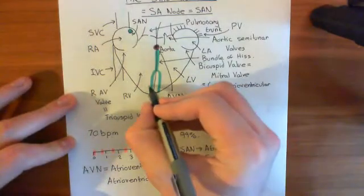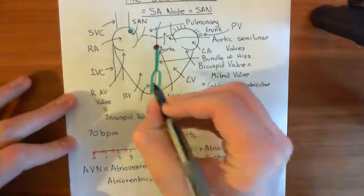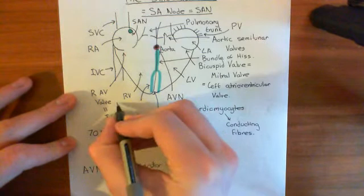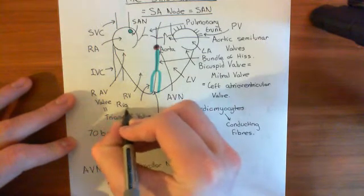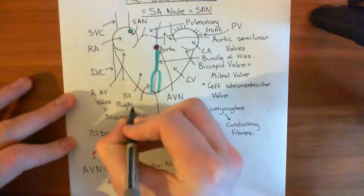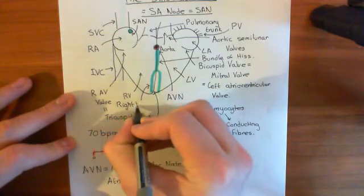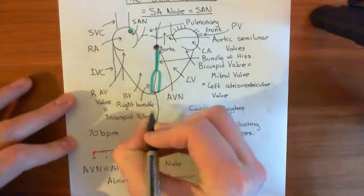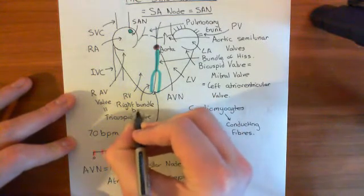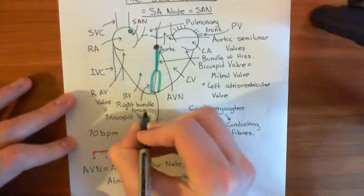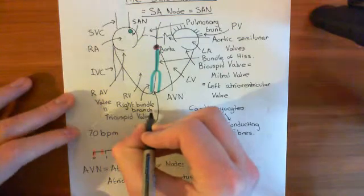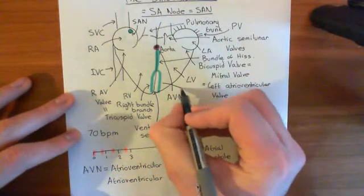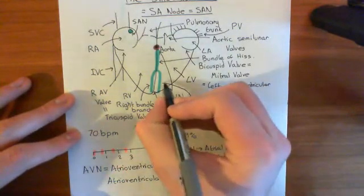The one that's going to service the right heart is known as the right bundle branch — the right branch of the bundle of His, which is why it's called the right bundle branch. And the one that's going to service the left heart is known as the left bundle branch.